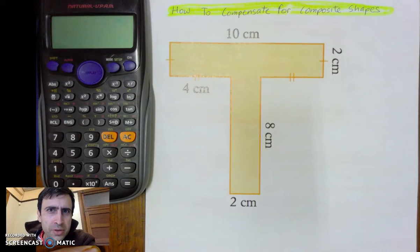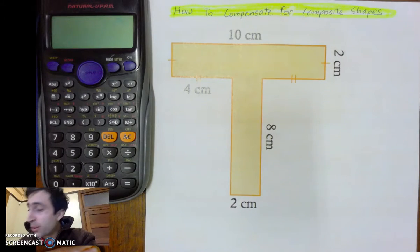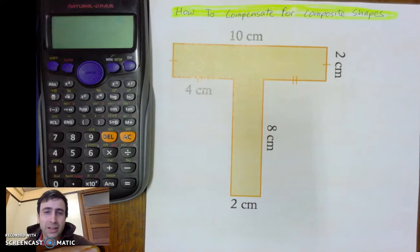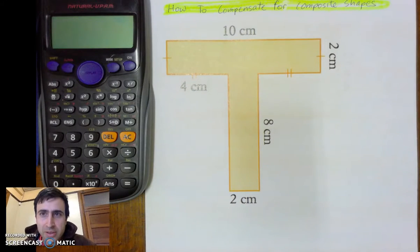Welcome to how to compensate for composite shapes. I didn't even pronounce that right. How to compensate for composite shapes. Now before we even begin, we need to really clarify what on earth is a composite shape?